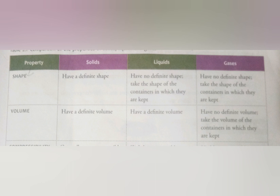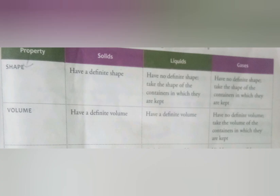Liquids have no definite shape because their molecules are loosely packed and allow some movement of the molecules, so they take the shape of the container in which they are kept. In gases, there is no definite shape. Gases take the shape and volume of the container they occupy because the intermolecular space in gases is maximum and there is negligible intermolecular force of attraction, so molecules move in all directions.